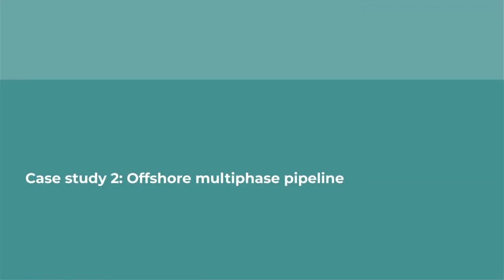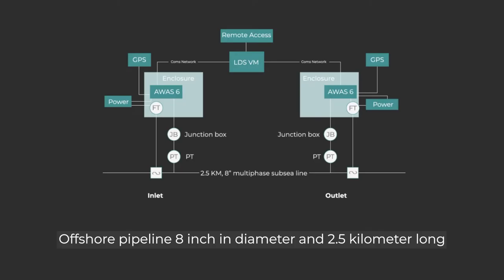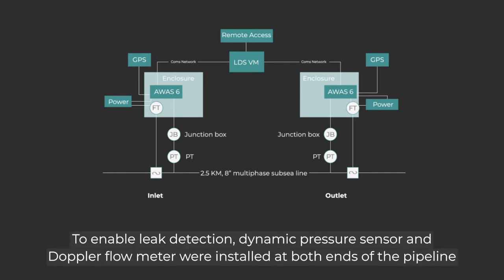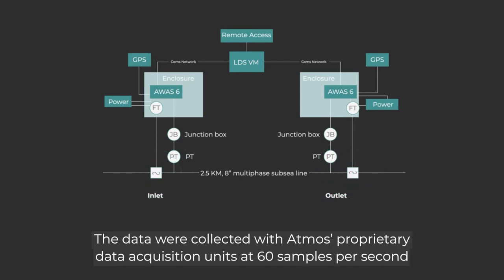Case Study 2: Offshore Multi-Phase Pipeline. An 8-inch diameter, 2.5-kilometer long offshore pipeline transports mostly oil and water with a small fraction of gas. There was no existing instrumentation on this pipeline. To enable leak detection, dynamic pressure sensors and Doppler flow meters were installed at both ends of the pipeline.